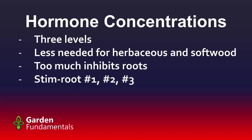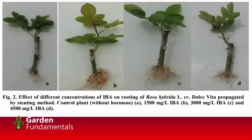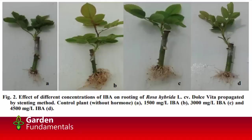Too much of this hormone will prevent rooting. Here's a picture from a research paper on rooting roses using different concentrations of IBA — the actual name of the compound. The cutting on the left has no rooting hormone and has roots, but the root system is quite small. The two in the middle have pretty good root systems. But the one on the right — with the highest concentration of hormone — actually has a smaller root system. This is a case where more is not better. It's really important not to put too much on, which is why in the video I knock off the excess.